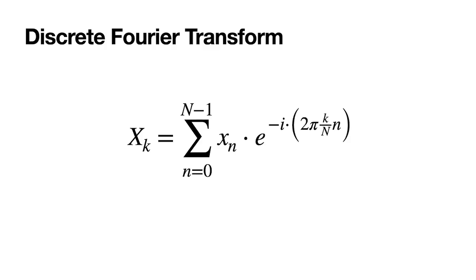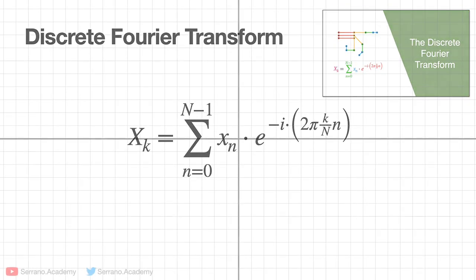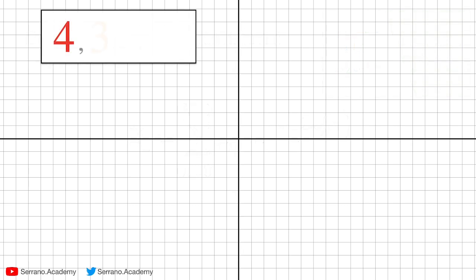This over here is the formula for the Fourier transform. It looks complicated, but in another video we go over it in detail. However, I'm going to give you a very quick summary. Let's say we have a sequence 4, 3, 2, 1 — that's our example — and we're going to find the discrete Fourier transform of the sequence.